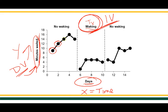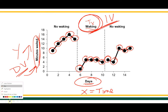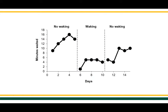Looking at the data on this line graph: in the baseline condition we have approximately nine, twelve, fourteen, sixteen, fourteen. In the treatment condition we see roughly one, five, five, five, four. Then in the final no waking reversal condition: five, four, eight, seven, eight — and that will be important when we come back to visual analysis.